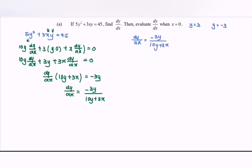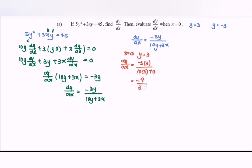For the first case, when x is equal to 0 and y is equal to 3, substitute: dy/dx equals negative 3 multiplied with 3 over 10 multiplied with 3 plus 0. That gives negative 9 over 30. Simplifying, dy/dx is equal to negative 3 over 10.